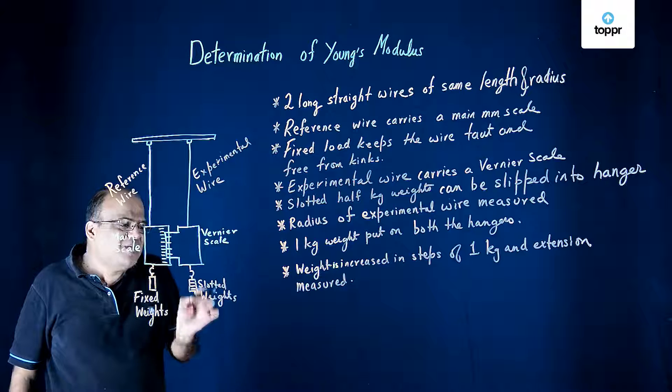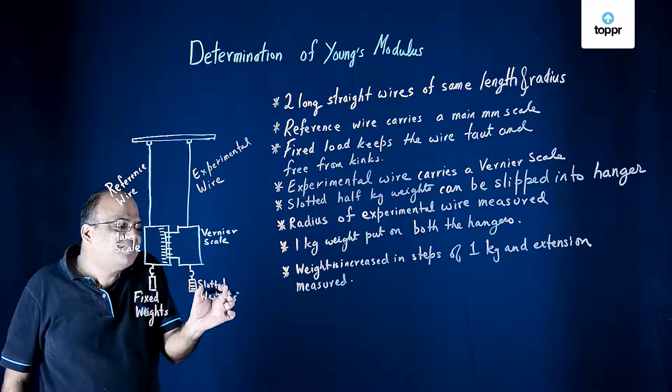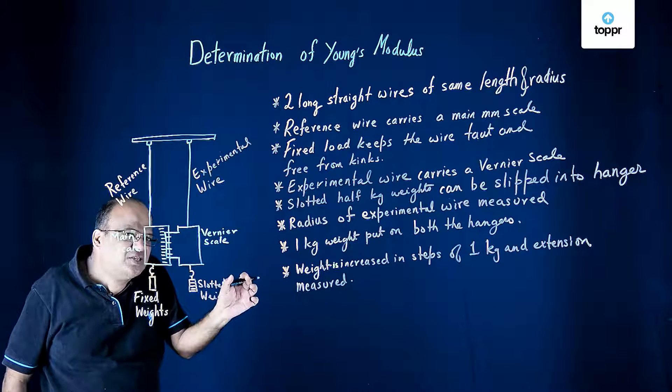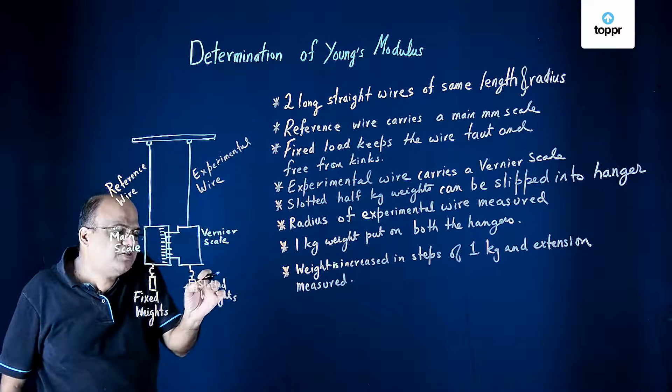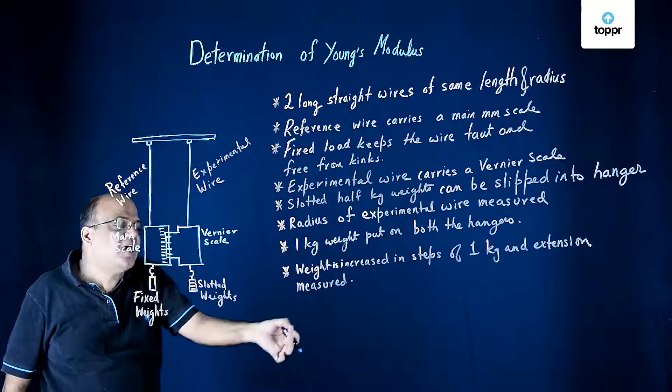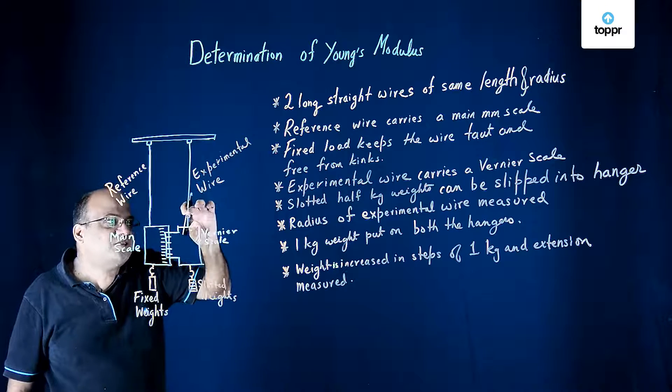After we have done this, we start increasing the weight, the slotted weights that we have got here in steps of half kg. So put half kg weight here, wait for a minute, note down the extension. Again put half kg weight here, wait for a minute, note down the extension.